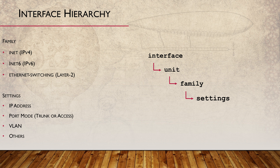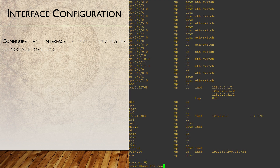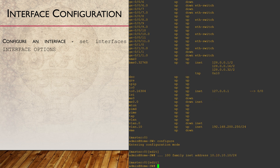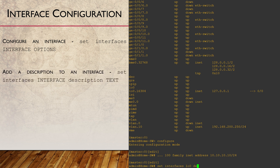Under the unit goes a family — the type of addressing used, like IPv4, IPv6, or Ethernet. Every unit must have at least one family. An INET family means an IPv4 address will be applied to the interface, while an Ethernet switching family will contain VLAN information. For a loopback interface, we set LO0 with unit number 100 and the INET family, then an IPv4 address using CIDR notation. We never use subnet masks in Junos, which is great. We can also set a description on the interface.